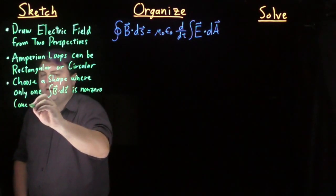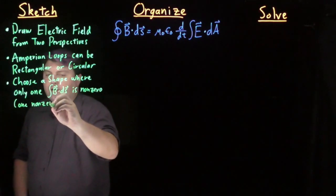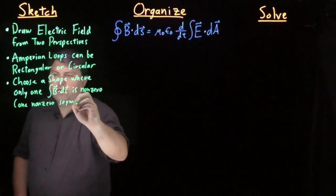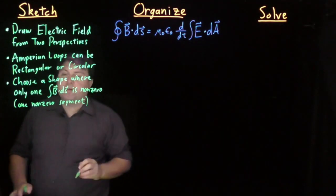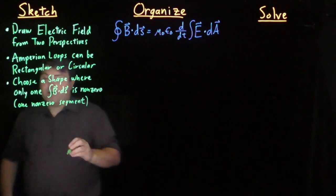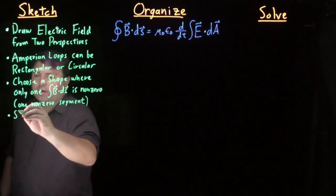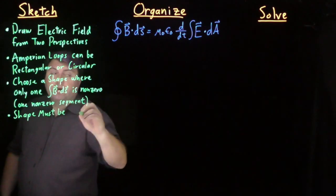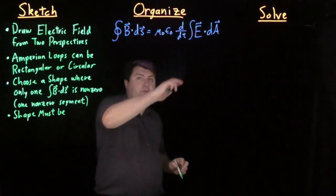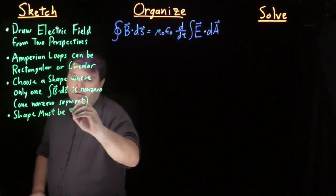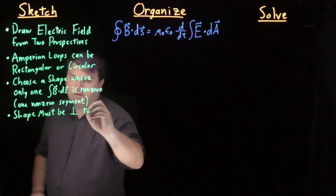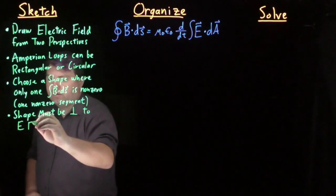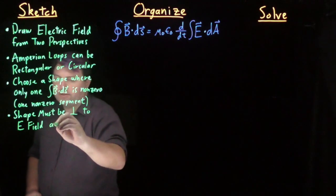And we want to choose a shape where only one integral of B·ds is non-zero. So we have one non-zero segment. And we also need our shape must be perpendicular to the electric field at all times.